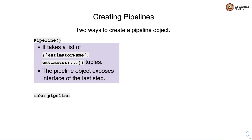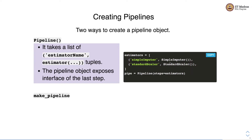The pipeline object exposes the interface of the last step. In this example, we define a pipeline object with a list of tuples as the estimator. The first tuple is the simple imputer transformer, given the name 'simple_imputer' so we can refer to this step by that name. The second tuple contains the standard scalar transformer object along with the name given to it.